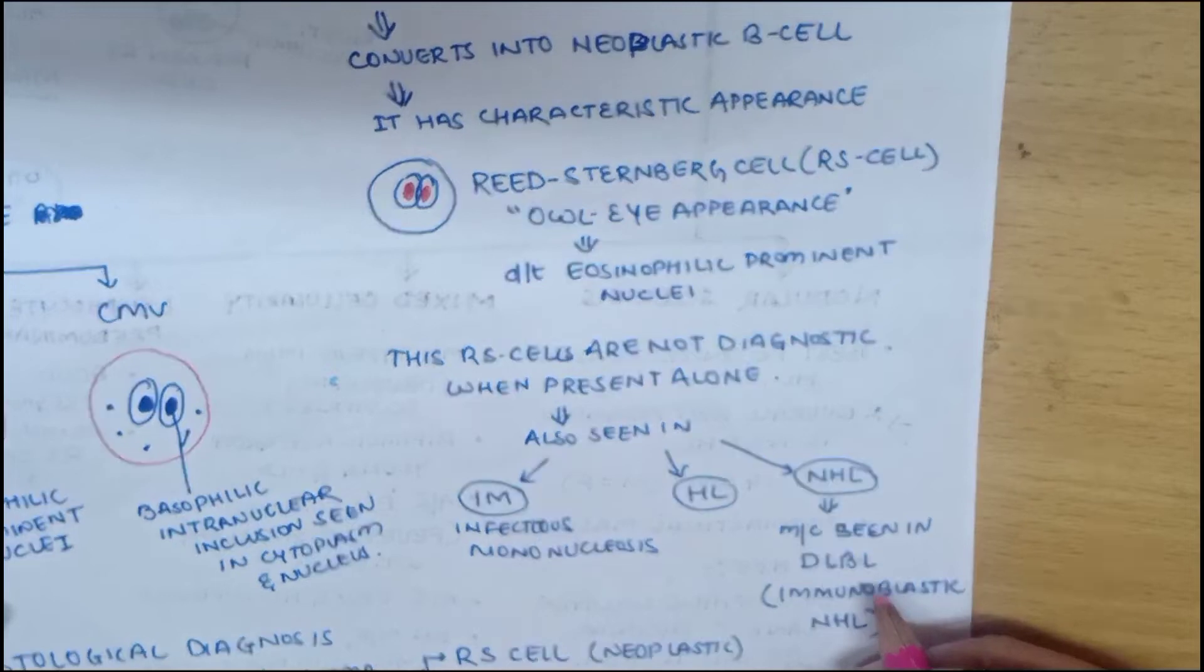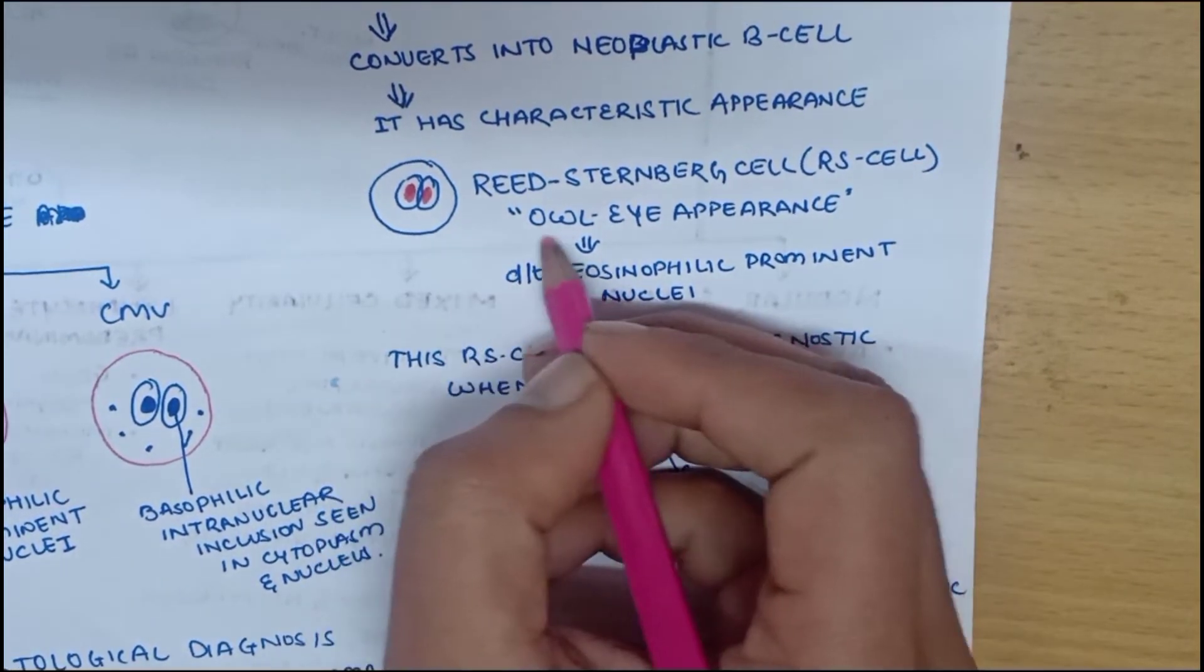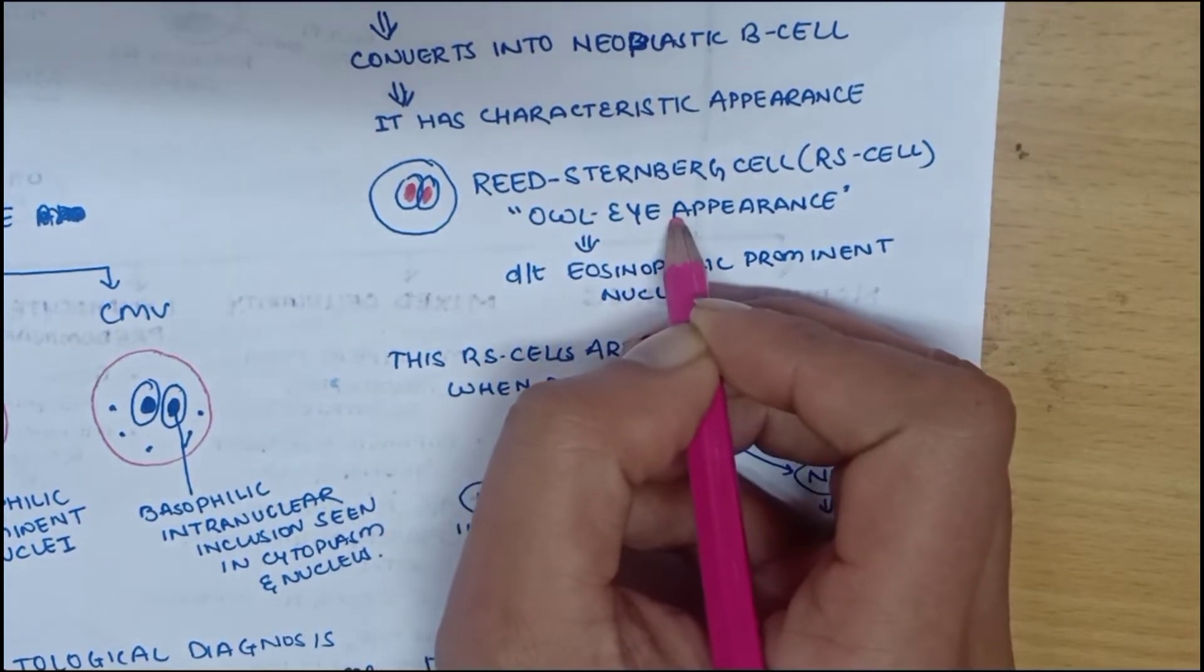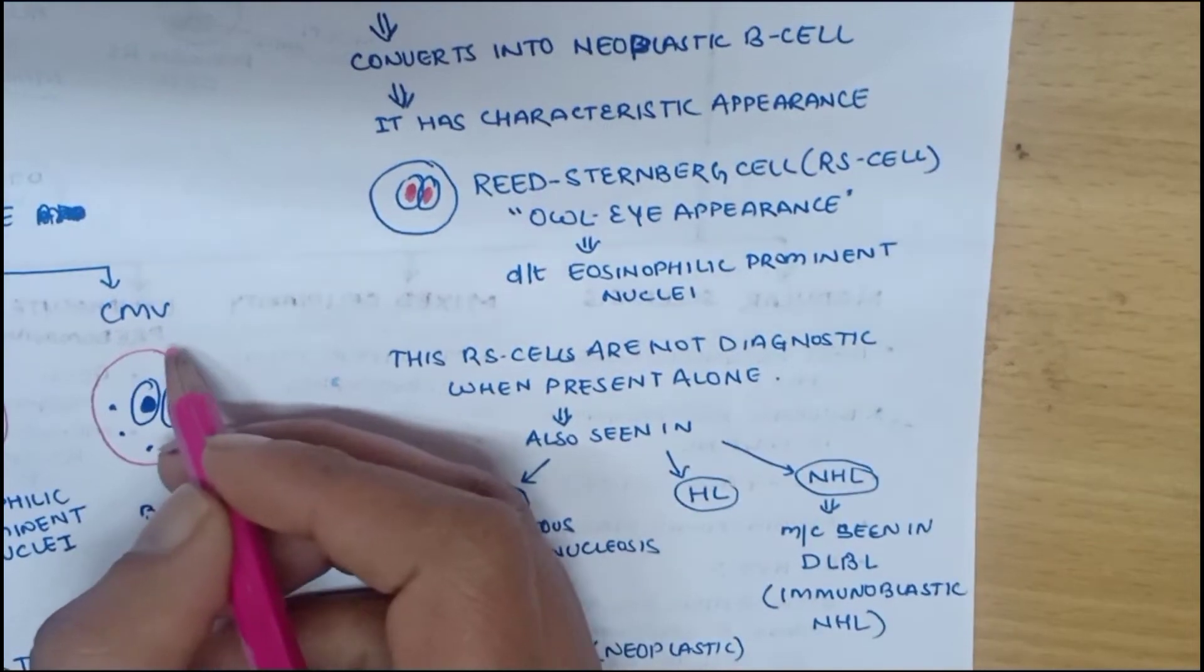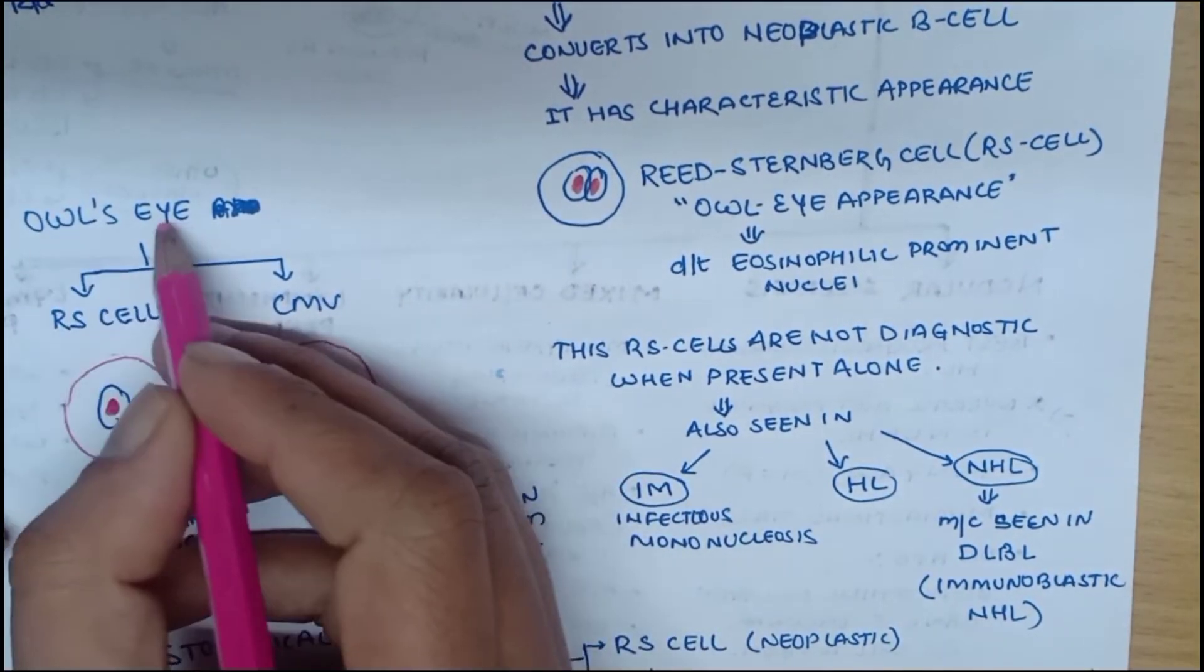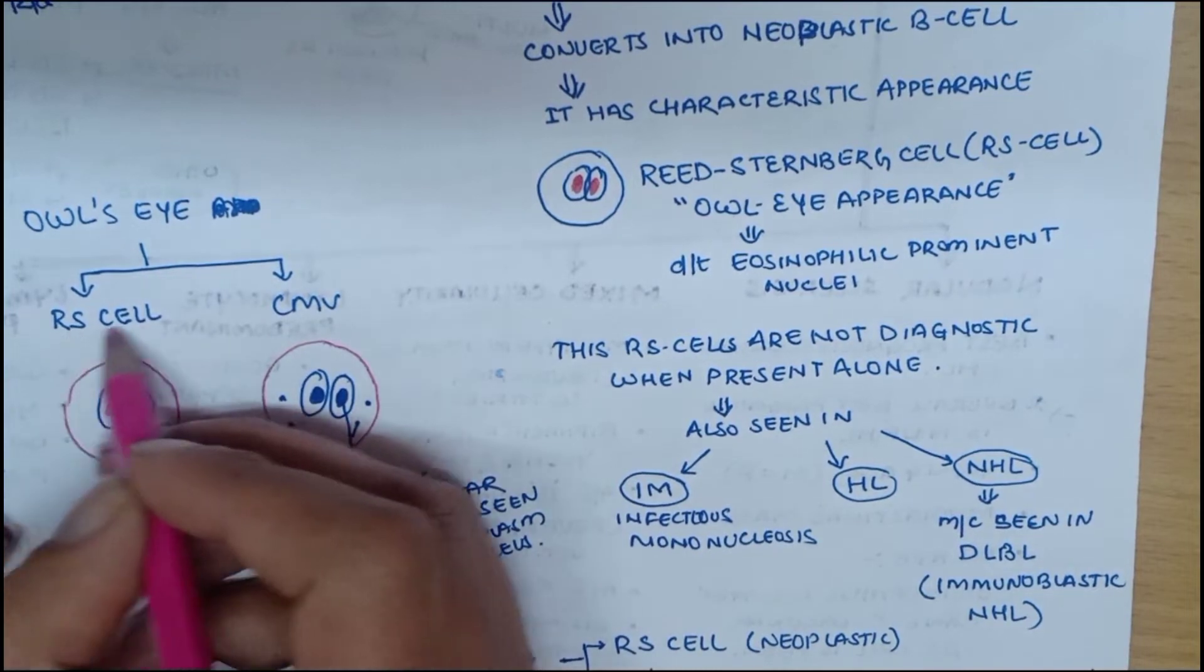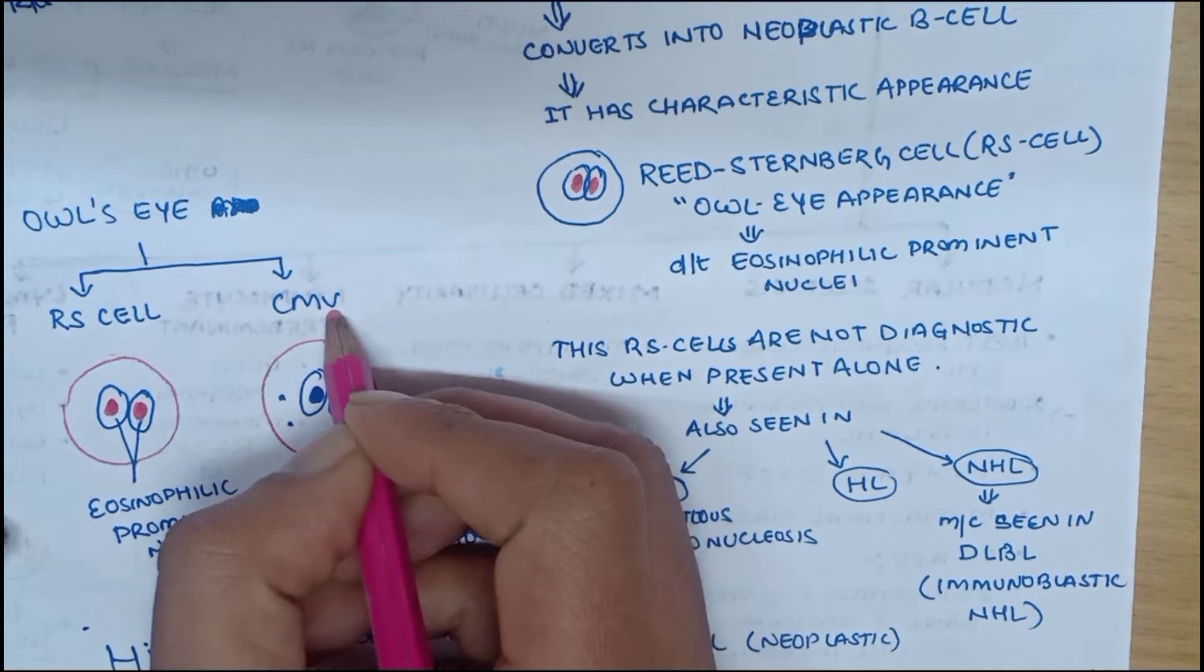This owl eye appearance is not only seen in Reed-Sternberg cells, it is also seen in cytomegalovirus infection.